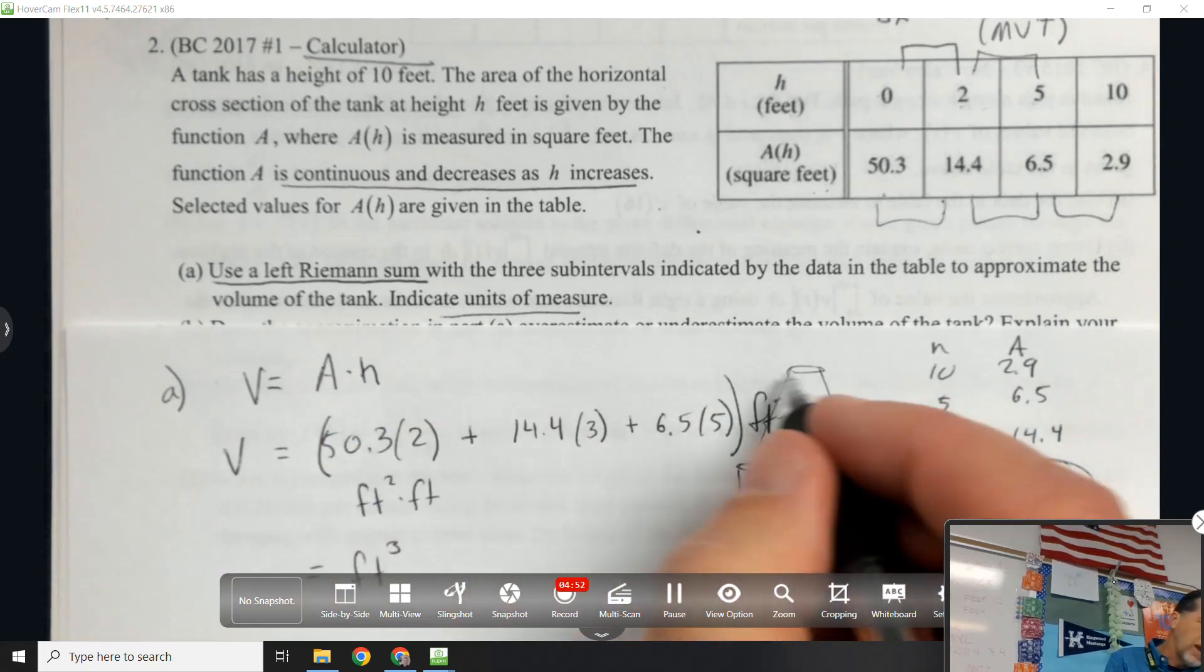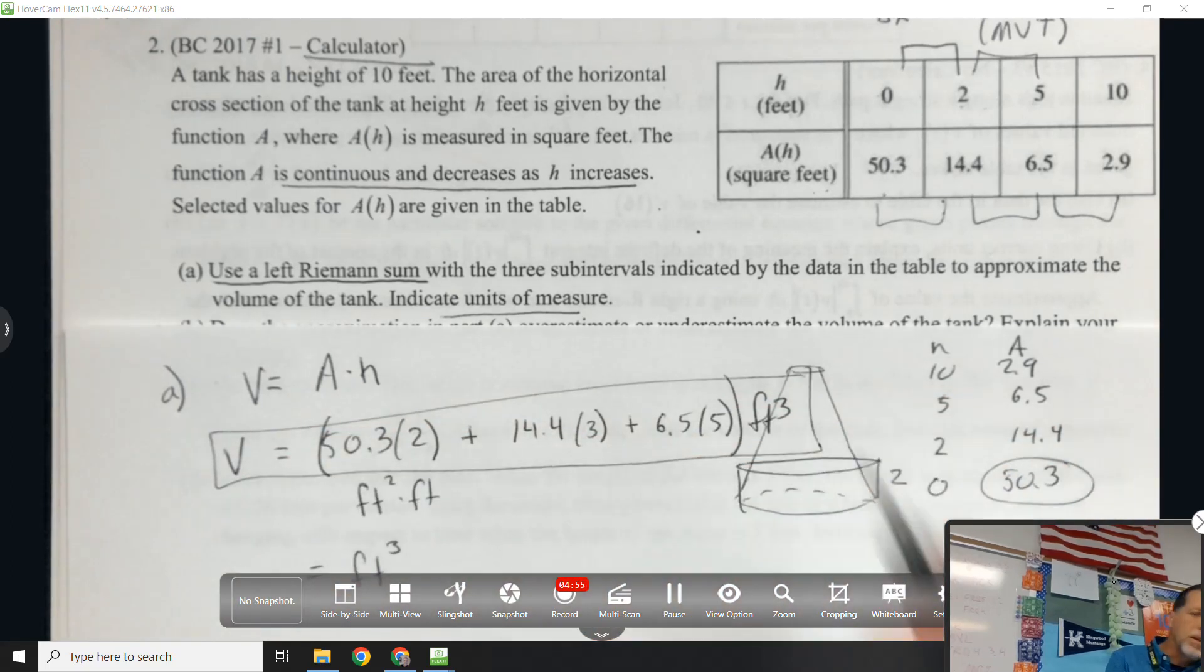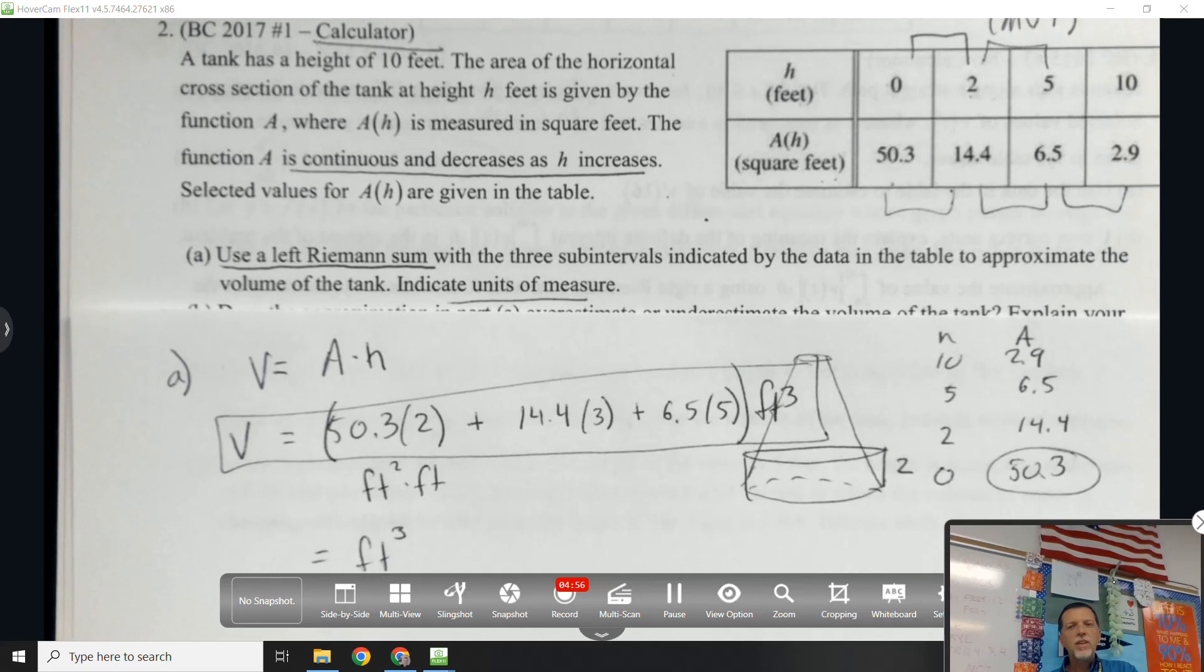Indicate units of measure. Well, volume should definitely be 3 units, right? Length times width times height. And sure enough, if we're multiplying area square feet times feet, that would be feet cubed.